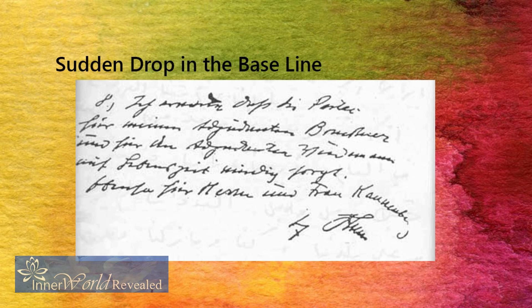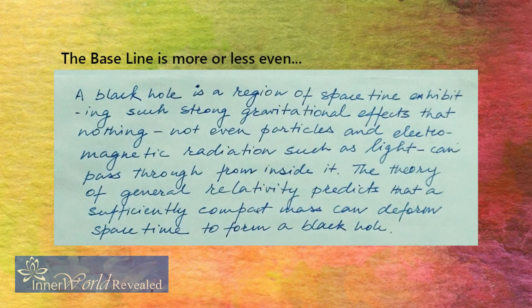Such people may also have suicidal tendencies. You can see this in the handwriting of Adolf Hitler, and no wonder he committed suicide. If the baseline is even, it shows level-headedness — the writer is neither too optimistic nor too pessimistic and is able to control emotions well. All factors of the writing — slant, word formations, pressure, and all related aspects — have to be analyzed before coming to a conclusion.